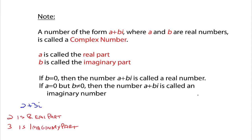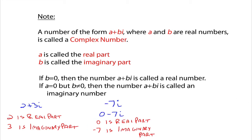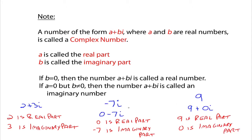If you had something like negative 7i, that's the same thing as 0 minus 7i — we just don't write the 0. The real part would be 0 and the imaginary part would be negative 7. And if you just have the number 9, which is a real number we've played with for a long time, 9 is the same thing as 9 plus 0i. So b is 0, the imaginary part is 0, and the real part is 9. So negative 7i, where the real part is 0 and imaginary part is negative 7, is just called an imaginary number. And 9, where the real part is 9 and the imaginary part is 0, is a real number.